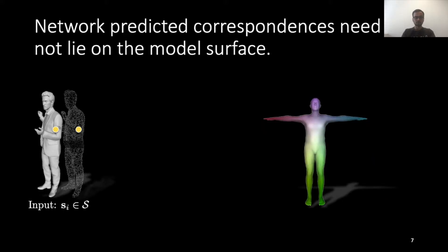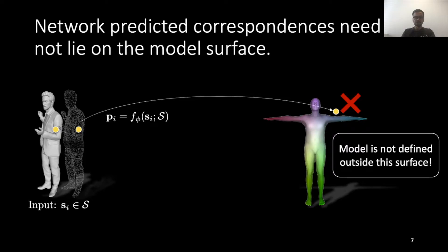But we have a slight problem. It is difficult to ensure that the network predicted correspondences lie on the surface of the model. And outside this surface, the model function is not defined, hence breaking our loop.